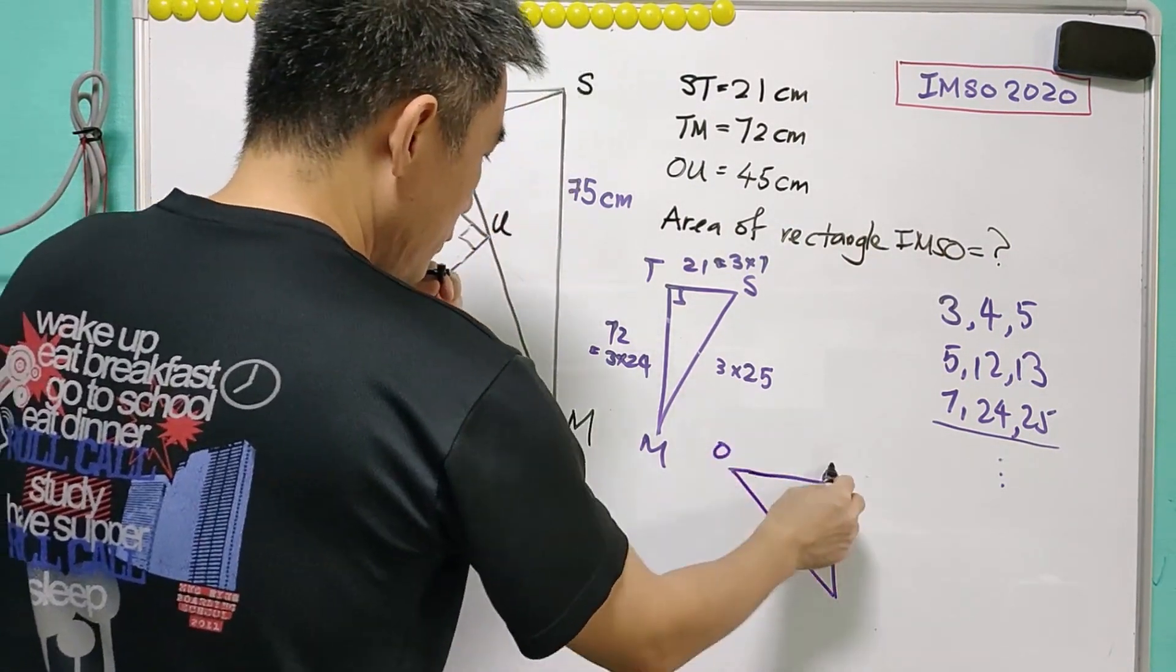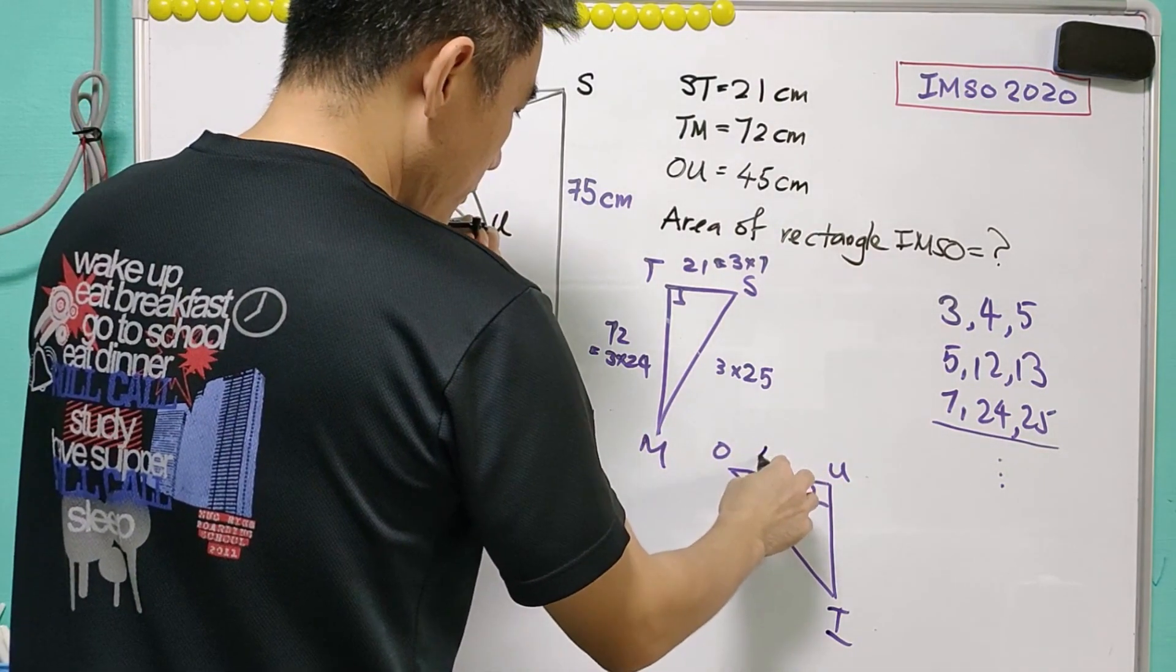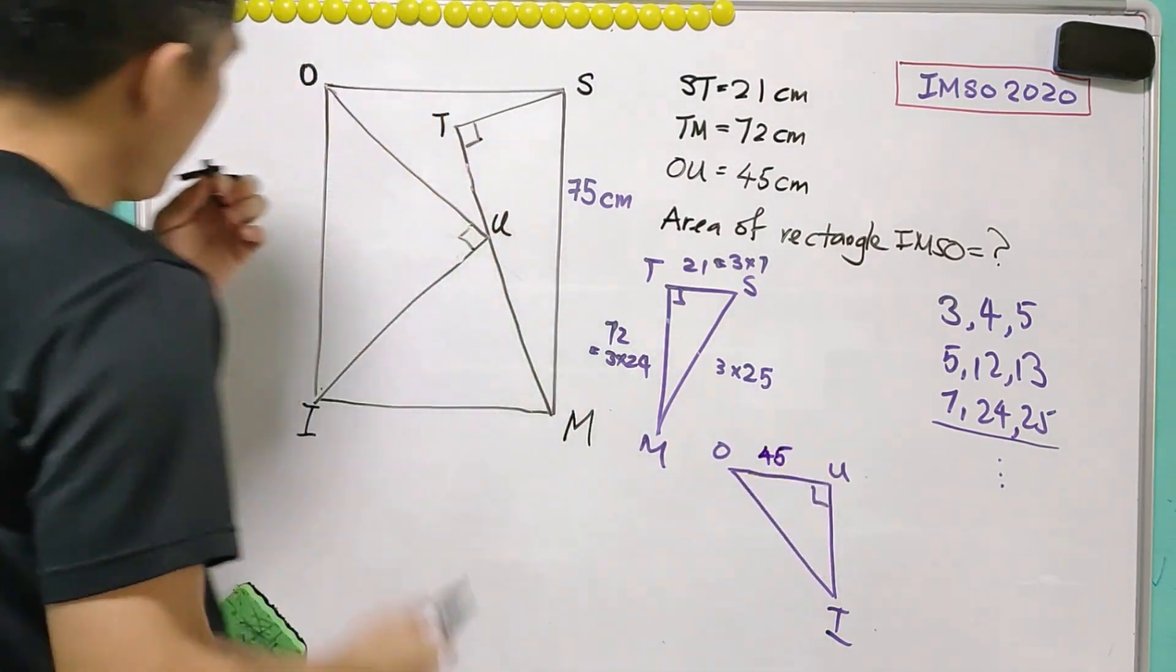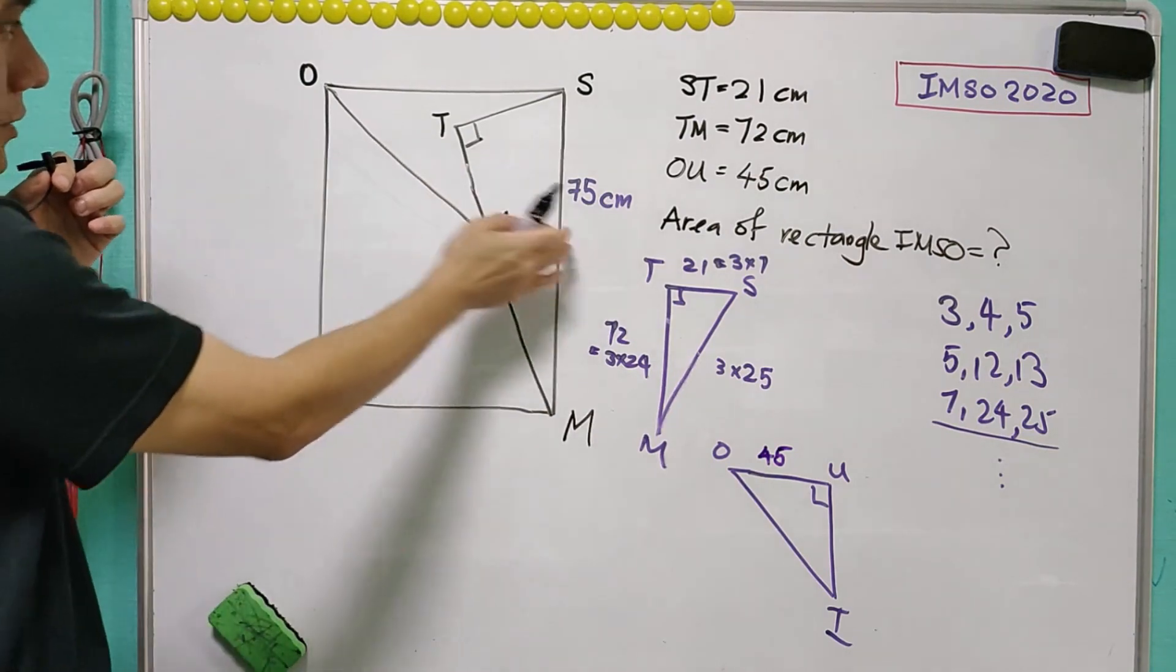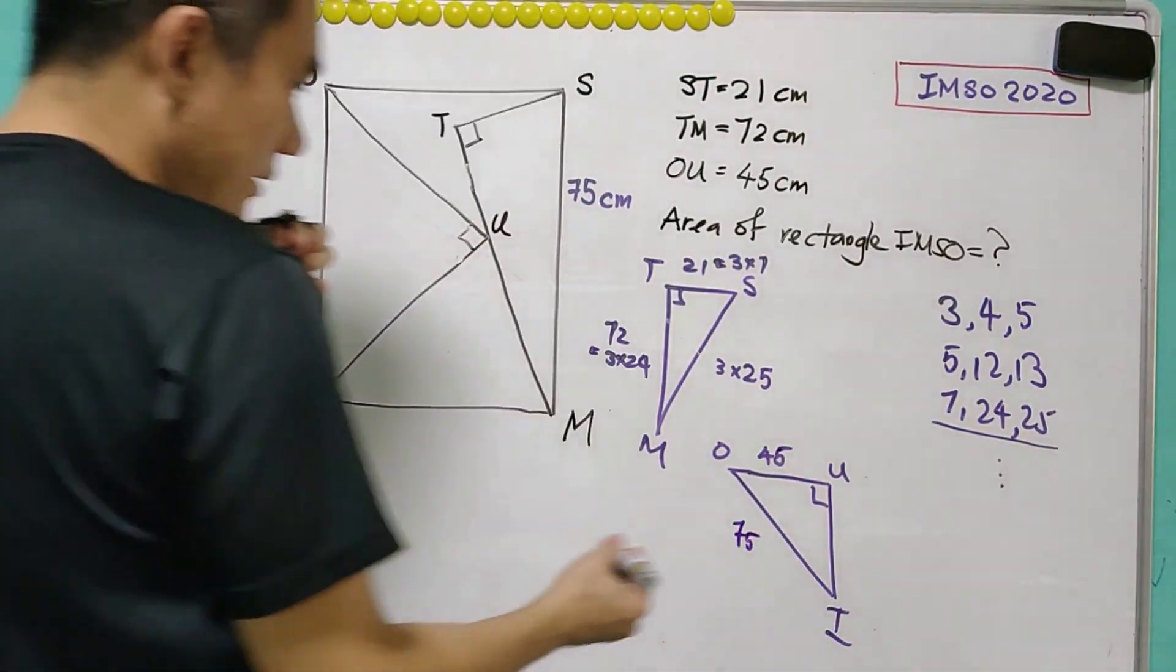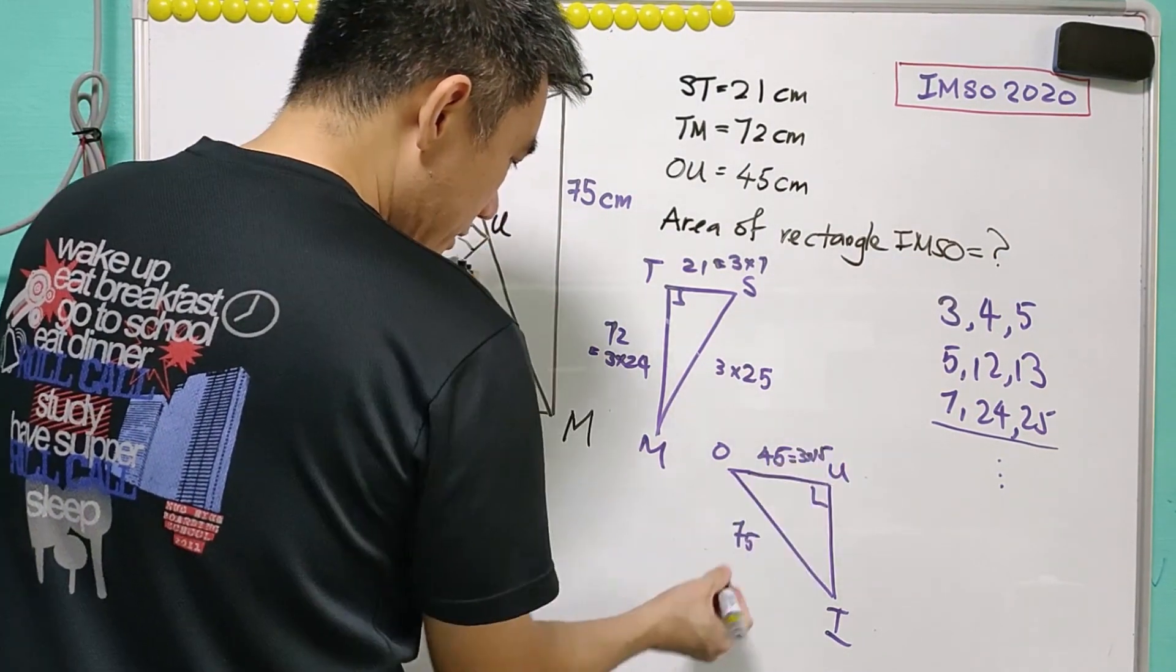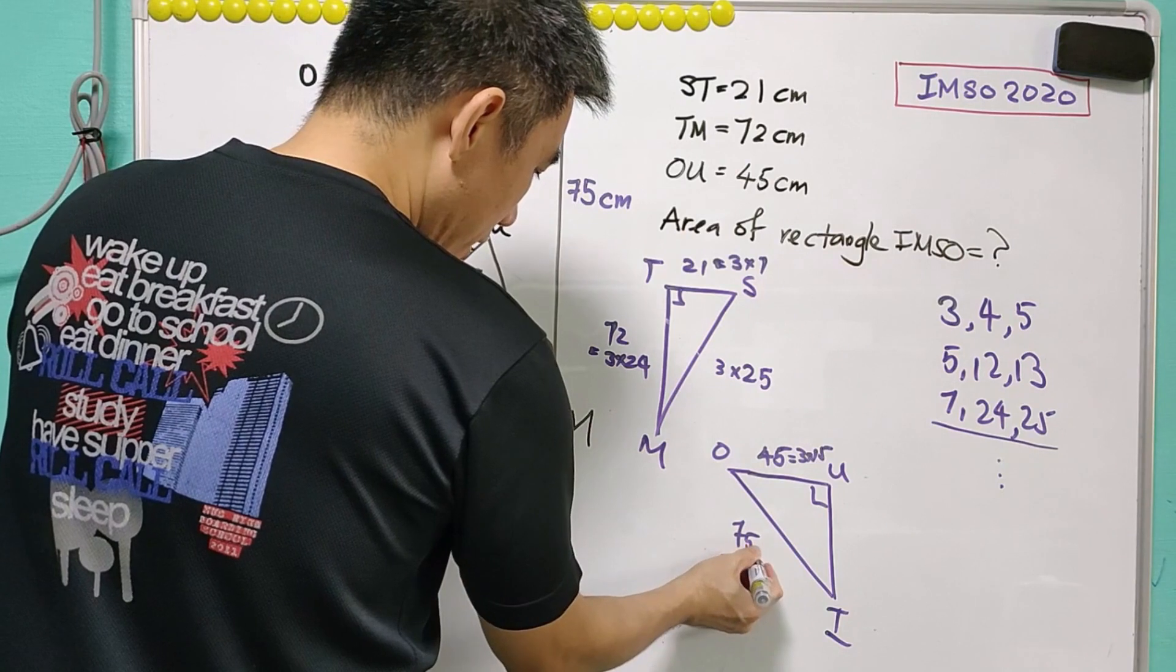Now we have the next one, OUI. OU is 45, and OI equals SM, that is 75. Again, we can say that this is equal to 3 times 15, and 75 is 5 times 15.